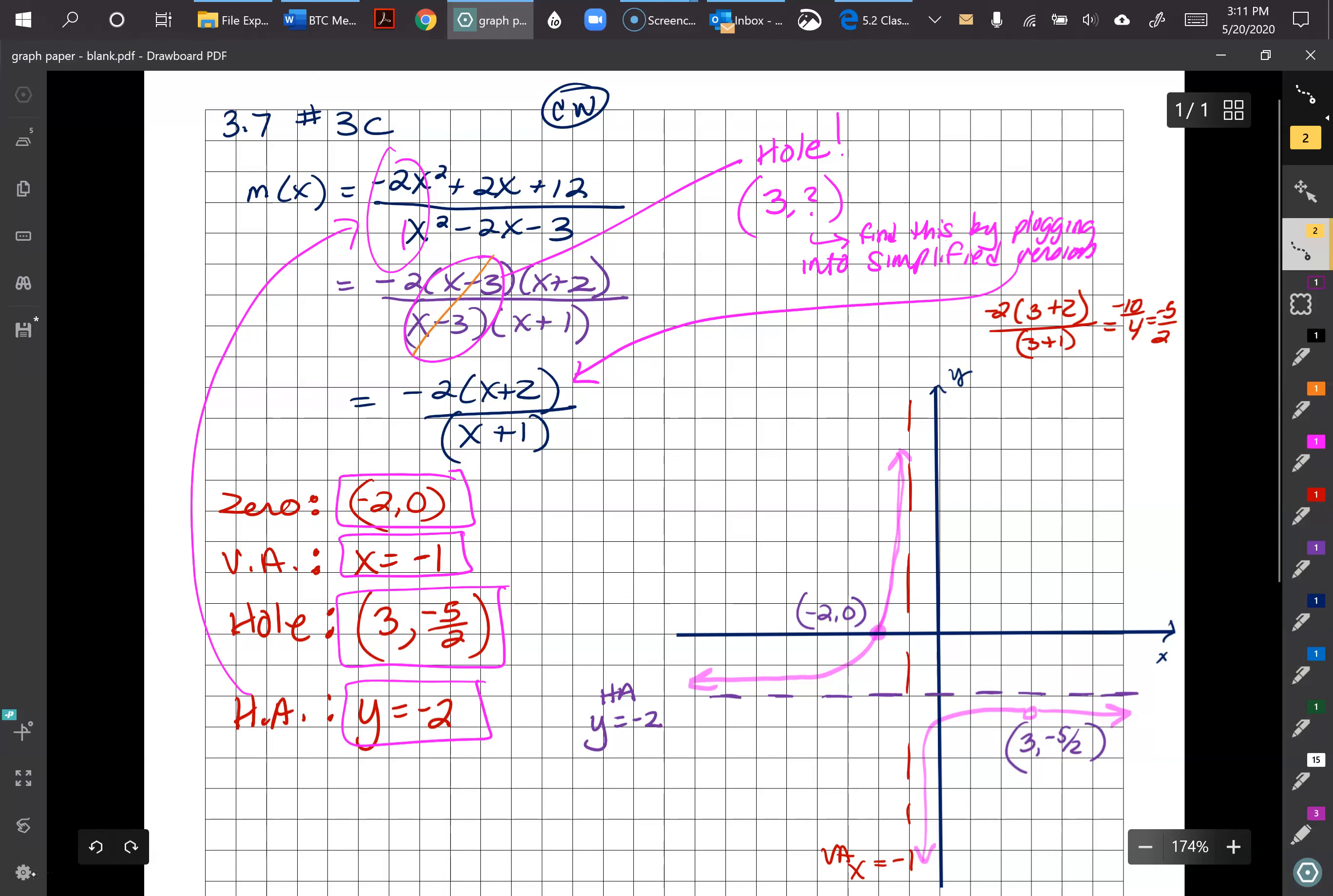Okay, so we have to plug the 3 into the simplified version. I did that over here. If you want to take a quick look at my math. I get negative 5/2. So again, zeros are written as points. Holes are written as points. When our numerator is set equal to 0, we get x equals negative 1. That's an asymptote. Asymptotes are always written as lines. They'll always be x equals something for the vertical. Horizontal asymptotes are always y equals a number. In this case, we have negative 2. So I plotted all that stuff here. You can see my graph. Make sure you label everything, including the asymptotes, if you want full credit on your graphs.